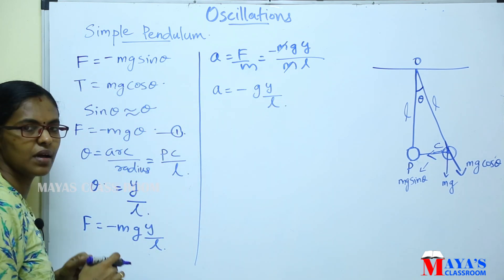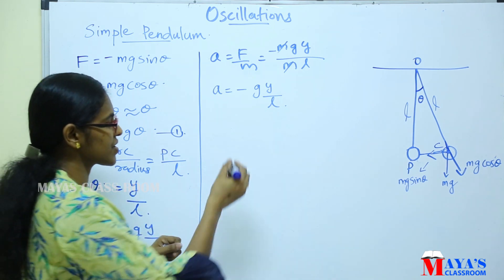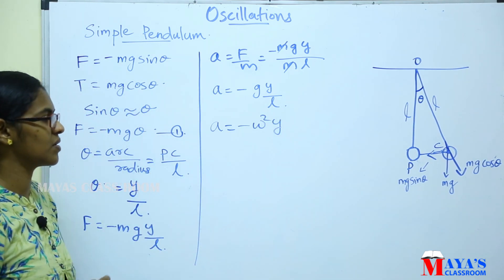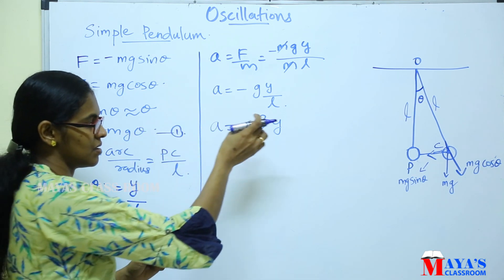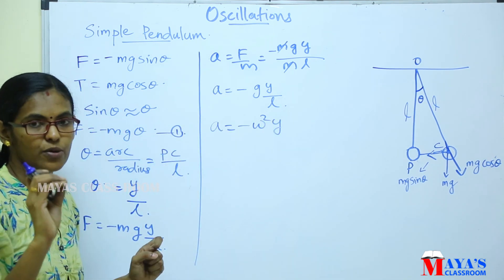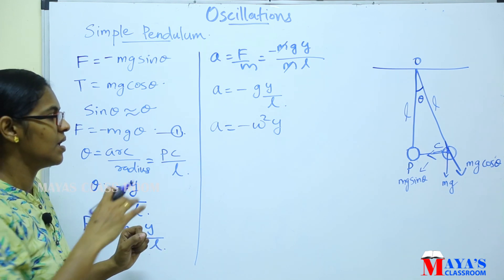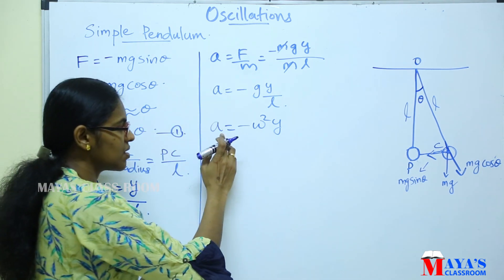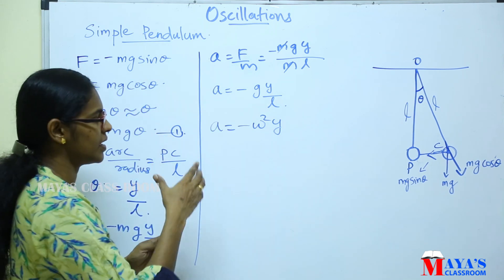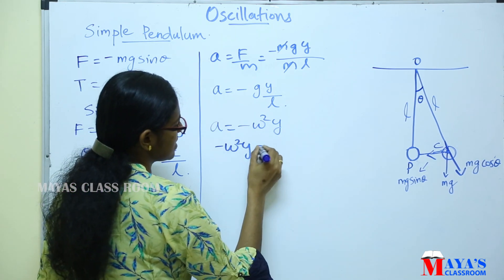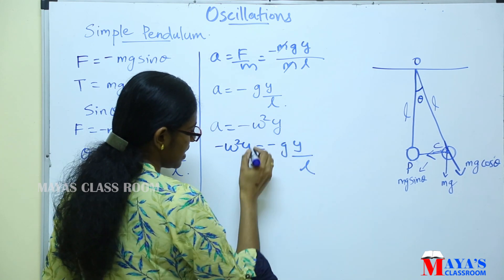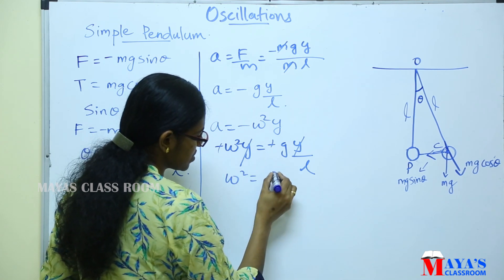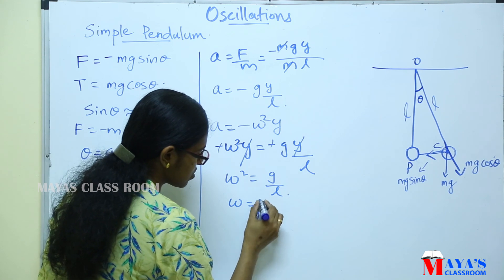Acceleration equals minus g·y/L. In the case of Simple Harmonic Motion, acceleration equals minus ω²y. Using the displacement equation y = A sinωt, equating: minus ω²y equals minus g·y/L. Cancelling y on both sides, therefore ω² equals g/L, and ω equals √(g/L).